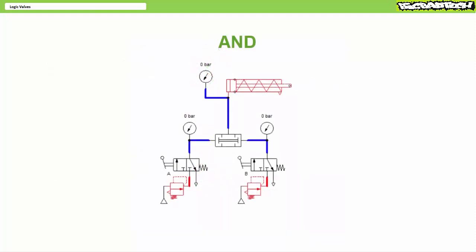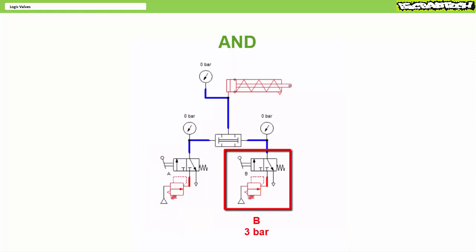A simple test circuit can be used to demonstrate the function of these two logic valves. Let's take a look at the AND or dual pressure valve first. The regulator on the left is set to 2 bar, or roughly 29 PSI. The valve on the left blocks or passes the signal to input A. The regulator on the right is set to 3 bar, roughly 43.5 PSI. The valve on the right blocks or passes the signal to input B.